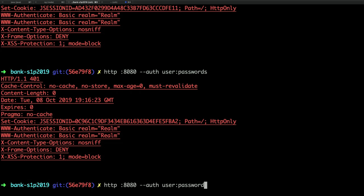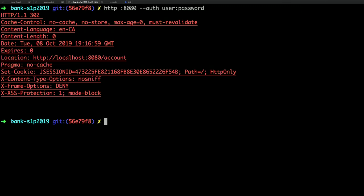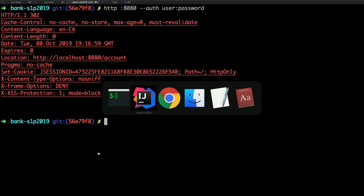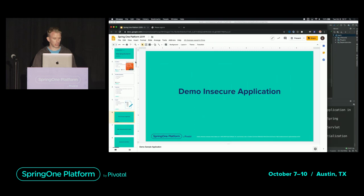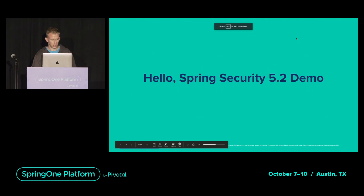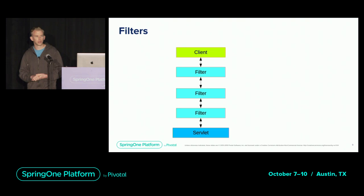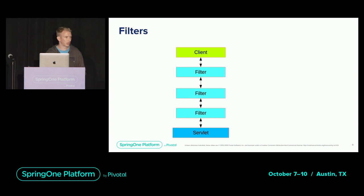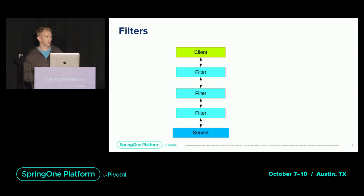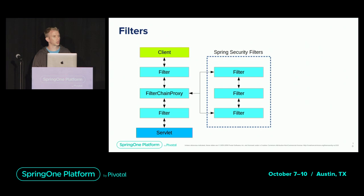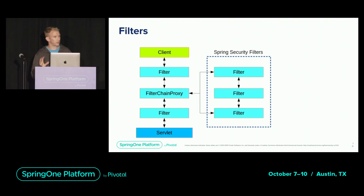Now what's happening behind the scenes? Spring Security is composed of filters. You have a client — browser, curl, command line, whatever — it makes a request, hits the first filter, and that filter says am I going to invoke the next filter? It keeps going until it gets to the servlet which renders the actual application. Spring Security has something special: a filter called Filter Chain Proxy, which is actually composed of more filters. The order of these filters is important — one filter decides if it continues down the line, and the DSL makes sure that happens in the right order.